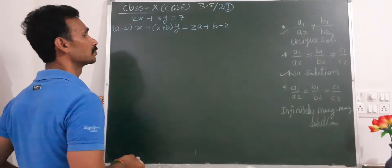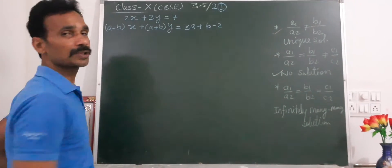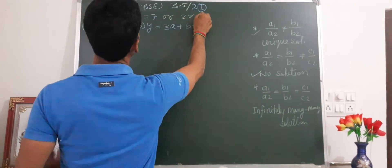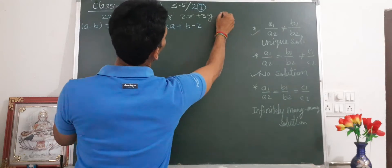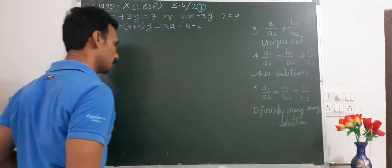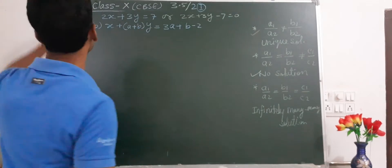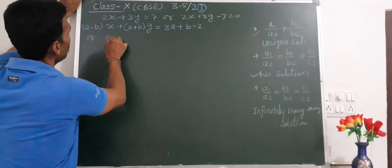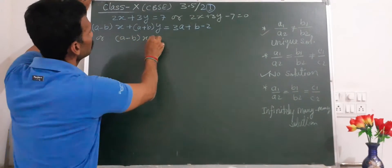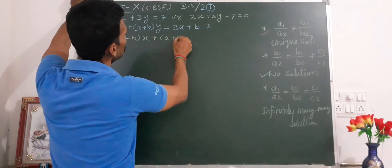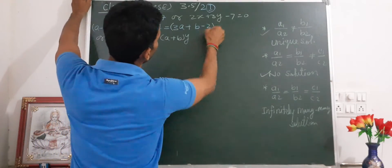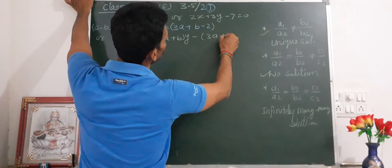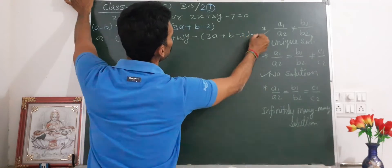We will write in the standard form of linear equation. So equation 1 becomes: 2x plus 3y minus 7 equal to 0. Equation 2 becomes: (A minus B)x plus (A plus B)y minus (3A plus B minus 2) equal to 0.